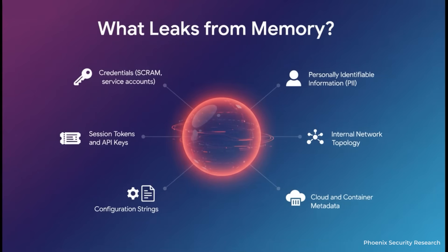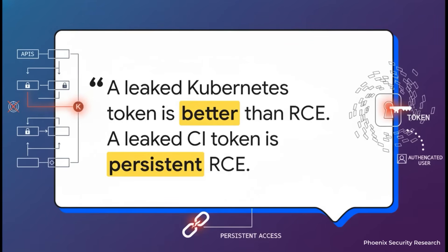So what's actually in this heap memory? It's a gold mine. You find database credentials, application API keys, session tokens, sensitive config details, pieces of PII from recent queries, and even metadata about the cloud environment itself. Every single one of these items is a key that could unlock another door. Why go through the trouble of writing complex shellcode and trying to evade detection when you can just steal the keys to the kingdom? A leaked cloud token gives an attacker authenticated access to powerful APIs. It's quieter, more persistent, and it completely bypasses traditional RCE detection. You're not an exploit anymore — you're just another trusted user.